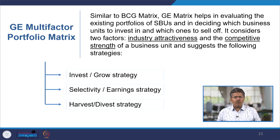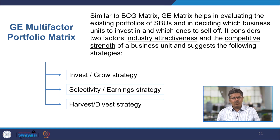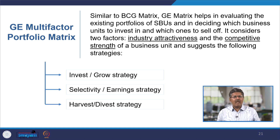The two factors on the x-axis and y-axis are the industry attractiveness and the competitive strength of the business - how attractive is the industry and what is the strength of the SBU. Depending on these two factors, the company can invest or grow, use a selectivity or earnings strategy, or completely use a harvest or divest strategy. Either they can put in more money, be selective about staying or not, or completely come out of the business.